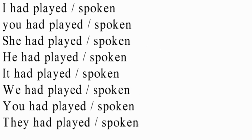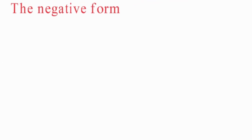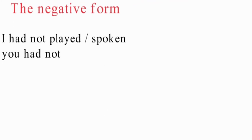In the case of irregular verbs, here is an example with 'speak': I had spoken, you had spoken, he, she, it, we, and they had spoken. Let's move now to the negative form.